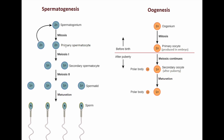So we have the 2N number in spermatogonium, which converts through mitosis into primary spermatocyte. From there, meiosis starts. Meiosis itself consists of two parts: meiosis I and meiosis II. In meiosis I, the diploid (2N) number divides into the haploid (N) number, and the initial two cells produced are called secondary spermatocytes.